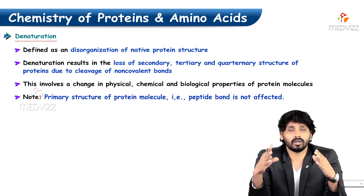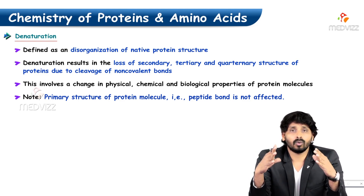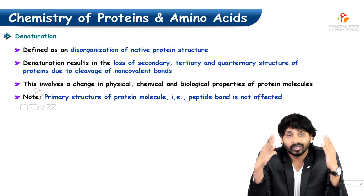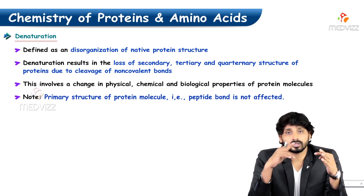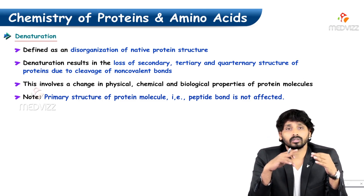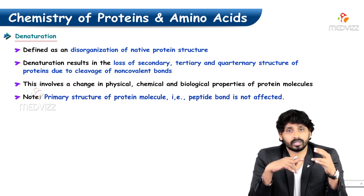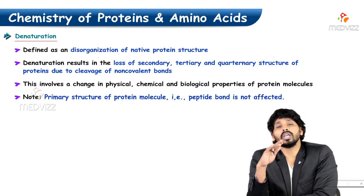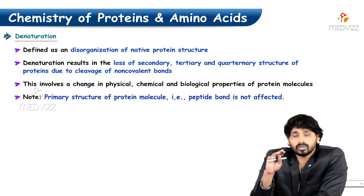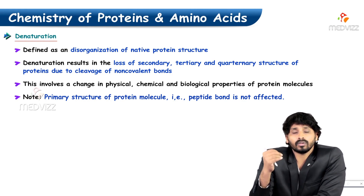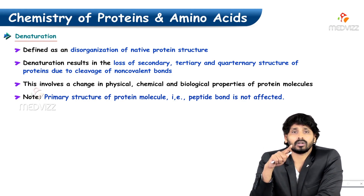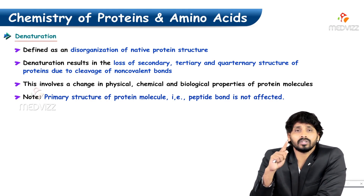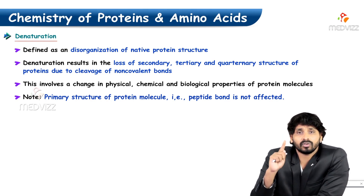We have studied the structure of proteins under four categories: primary structure, secondary structure, tertiary structure, and quaternary structure. If disturbance occurs to any one of these categories except primary structure, it is known as denaturation of protein.